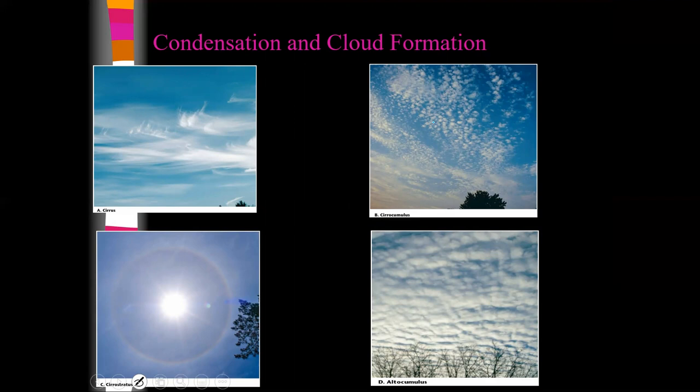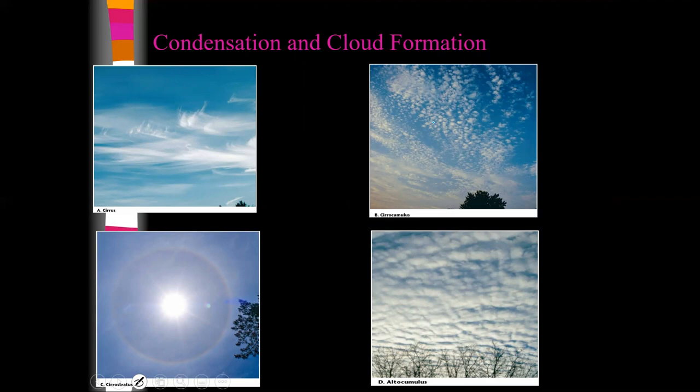Here's another view: cirrus clouds, cirrocumulus clouds, and cirrostratus clouds — there's the halo around the sun. And then altocumulus clouds, puffy, mid-level.